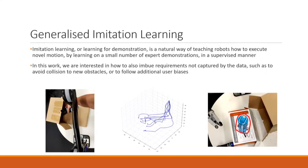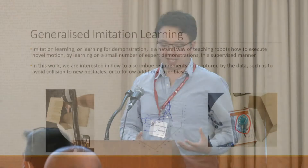The problem we're looking at today is the generalized imitation learning problem. Imitation learning is a natural way of teaching robots new skills, essentially by giving them a small number of expert demonstrations and then asking them to learn in a supervised manner. We're also interested in how to imbue additional requirements not captured by the data, such as avoiding collision or following additional user-specified biases.